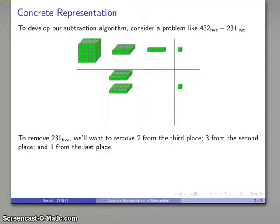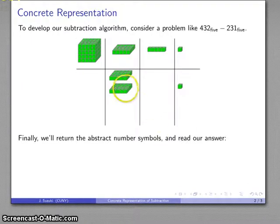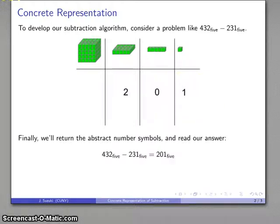And so this is what I have left, and now I want to change back and record using my abstract symbols. I have 2 of these, 0 of these, 1 of these, so my remainder is going to be 201 base 5.